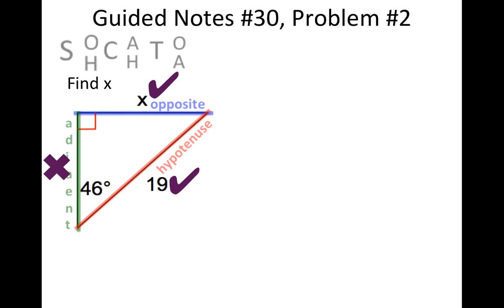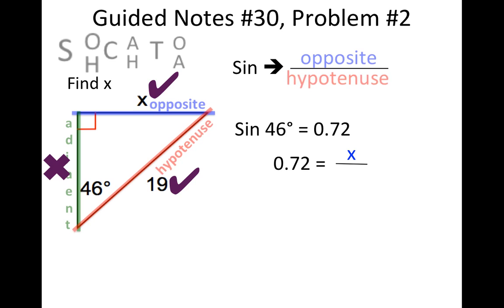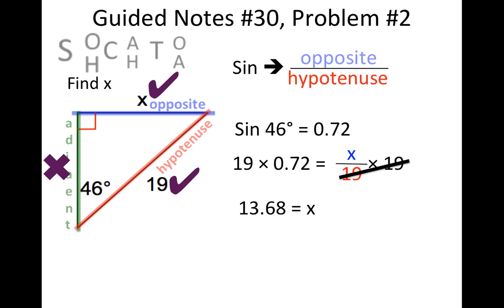So I'm going to use sine — opposite over hypotenuse. Looking up the sine of 46 degrees on a calculator or table, the sine of 46 degrees is 0.72. So 0.72 equals X over 19. Multiplying both sides by 19, on the right it cancels, and on the left 19 times 0.72 is 13.68. So X equals about 13.7. That's the power of trigonometry — with just an angle and one side, you can find how big the other side is, which until now we've never been able to do.